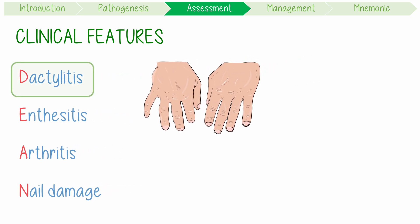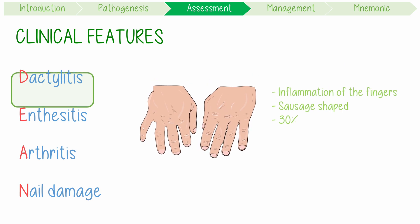D stands for dactylitis, which is just a fancy way of saying inflammation of the fingers or toes, making them swell up into a sausage shape. This occurs in about 30% of patients.